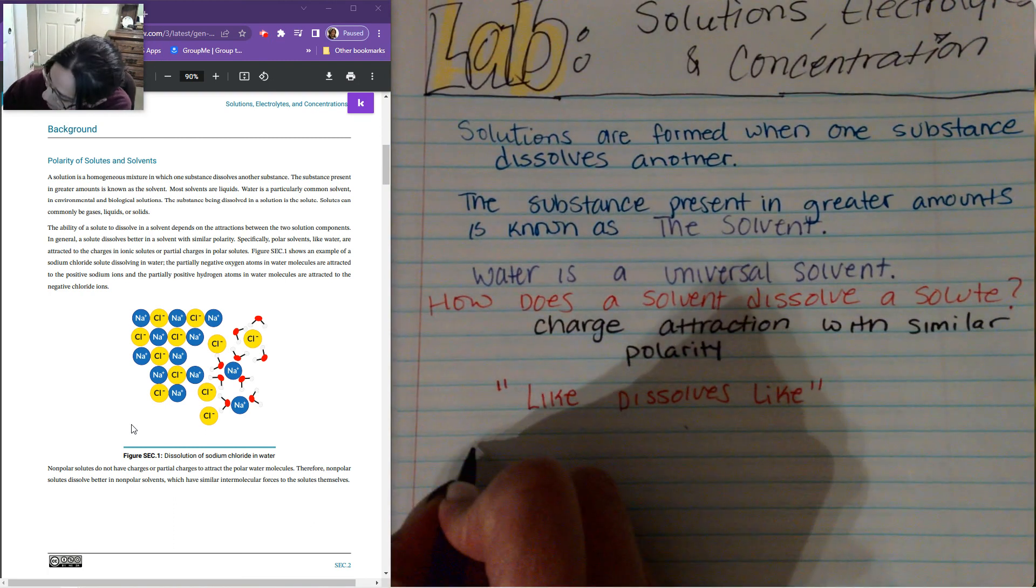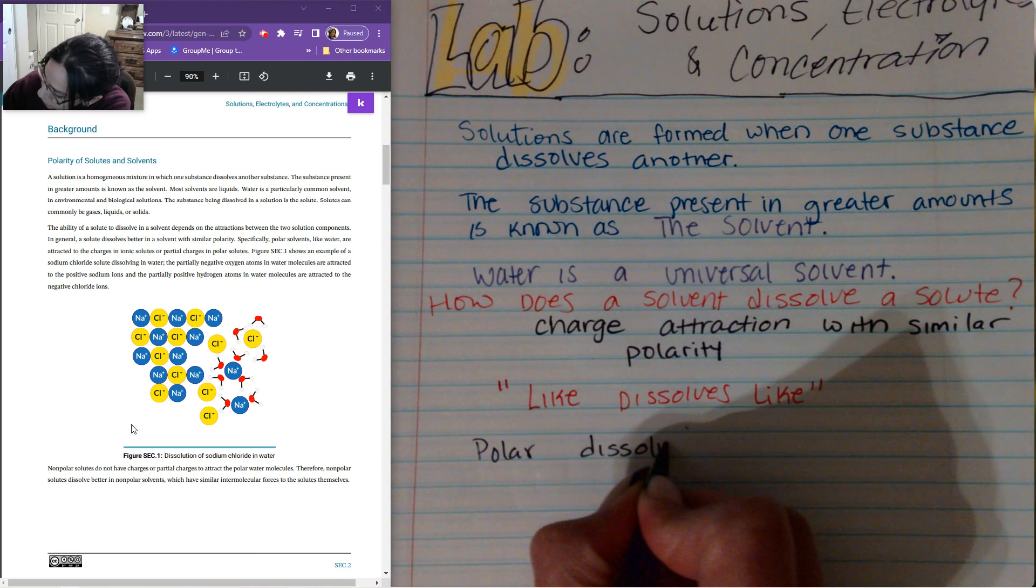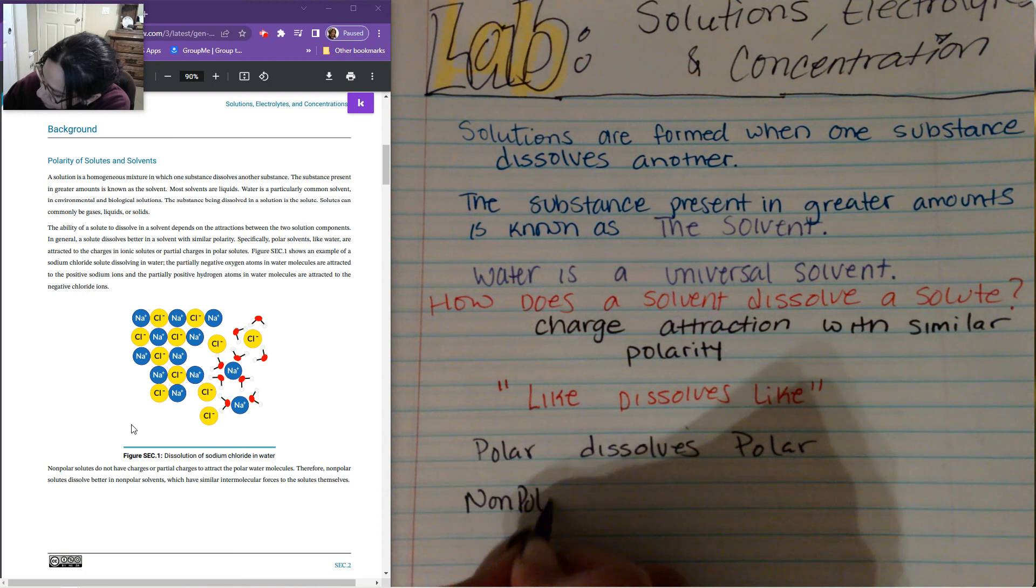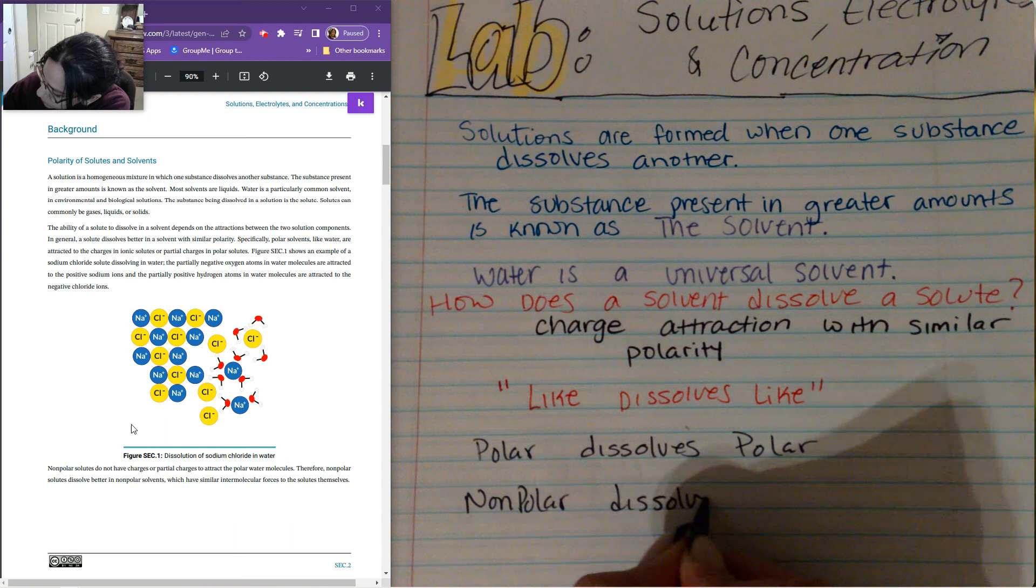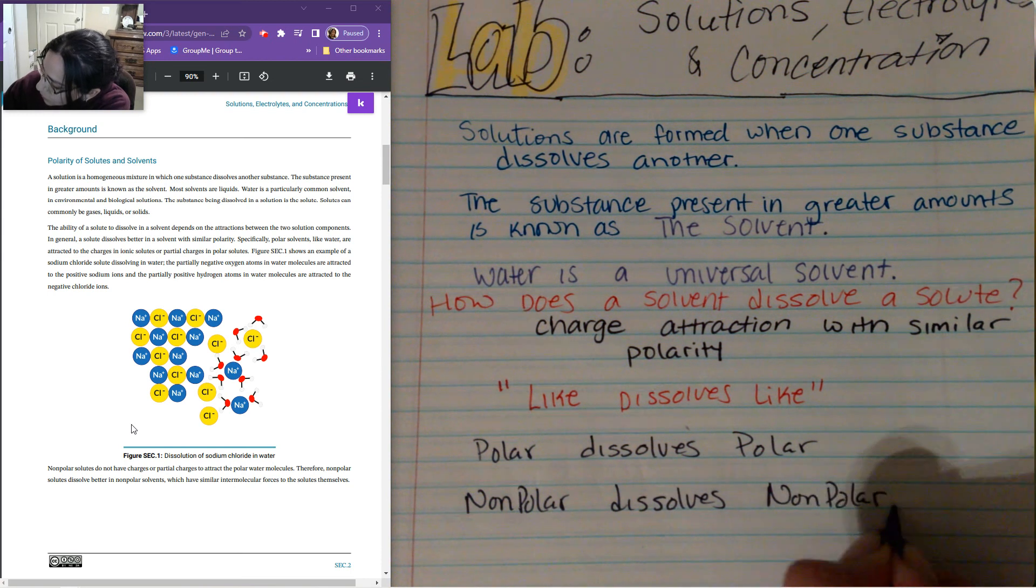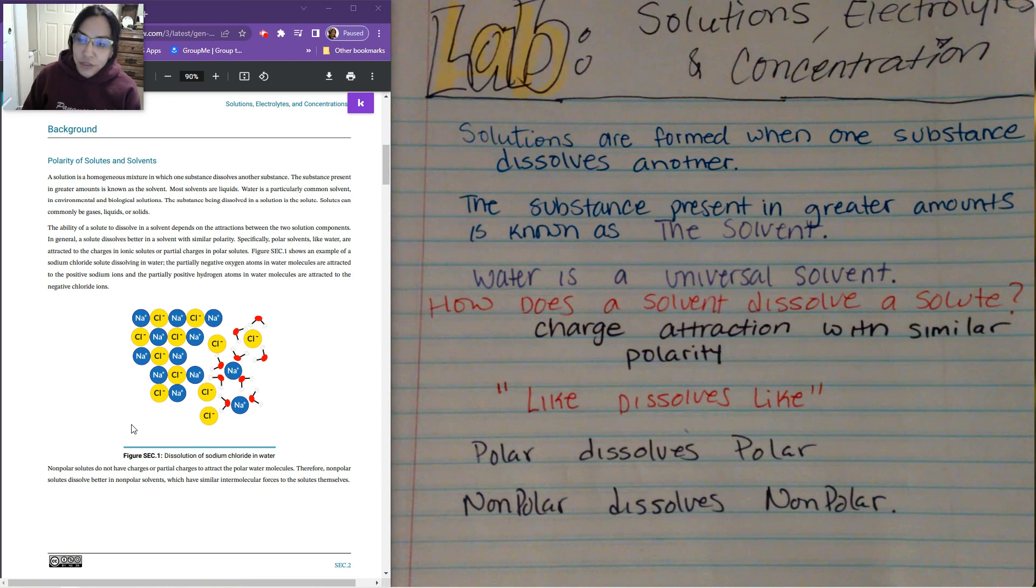And what like dissolves like mean is that polar dissolves polar and nonpolar dissolves nonpolar. So our polar substances, if we recall, those are substances that have ionic compounds, usually have a strong electronegativity differences, but you could also have covalent compounds that are polar as well when they don't share their electrons equally.